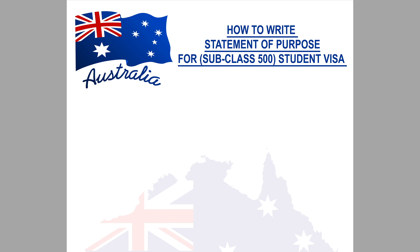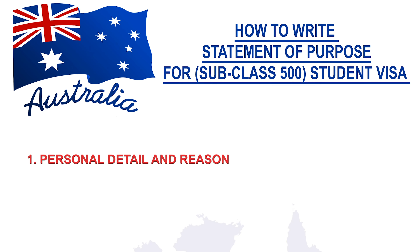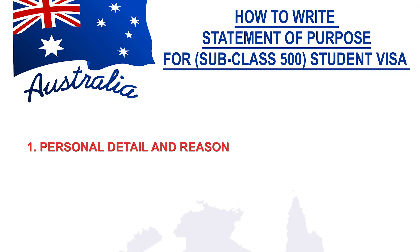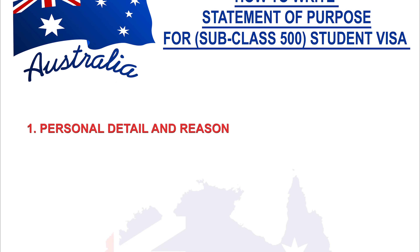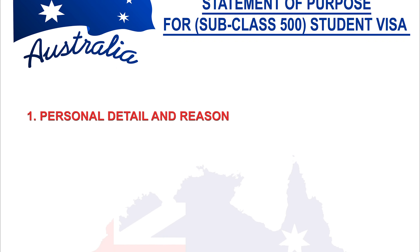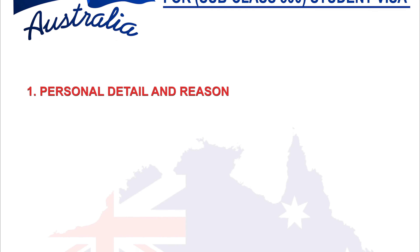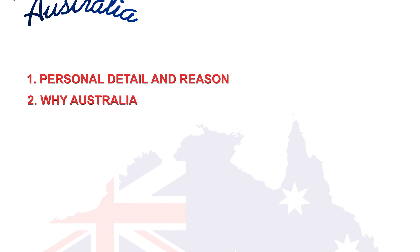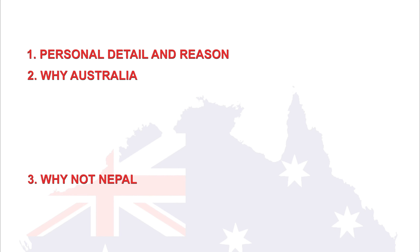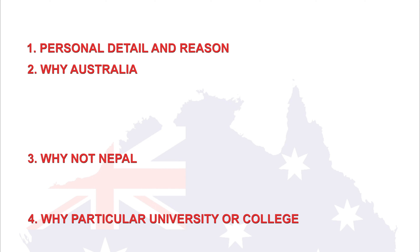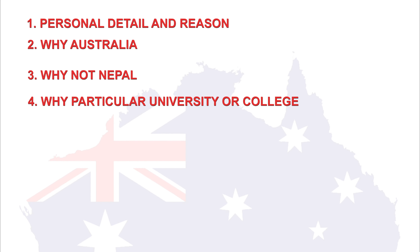Let me now break down the important points for you. Point number one is your personal detail and reason for studying in Australia. Please make sure to include these points while writing the statement of purpose. Point number two is why have you chosen Australia. Point number three, why not Nepal. Point number four, what's the reason behind choosing a particular university and not others.